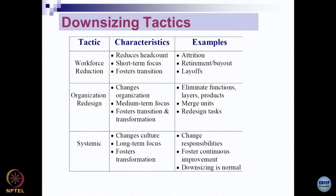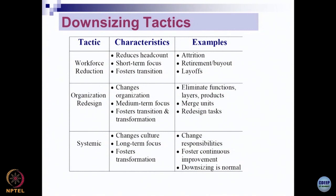Downsizing is of different types with different tactics, associated characteristics, and examples. This model is drawn from Cummings and Worley's book and was proposed by Cameron, Mishra, and a co-author. Workforce reduction is the first tactic of downsizing — a simple reduction of headcount. In absence of other tactics, it is short-term but quick to give results. If you are aiming at cost reduction in the quickest possible time, workforce reduction is the first mechanism people try.